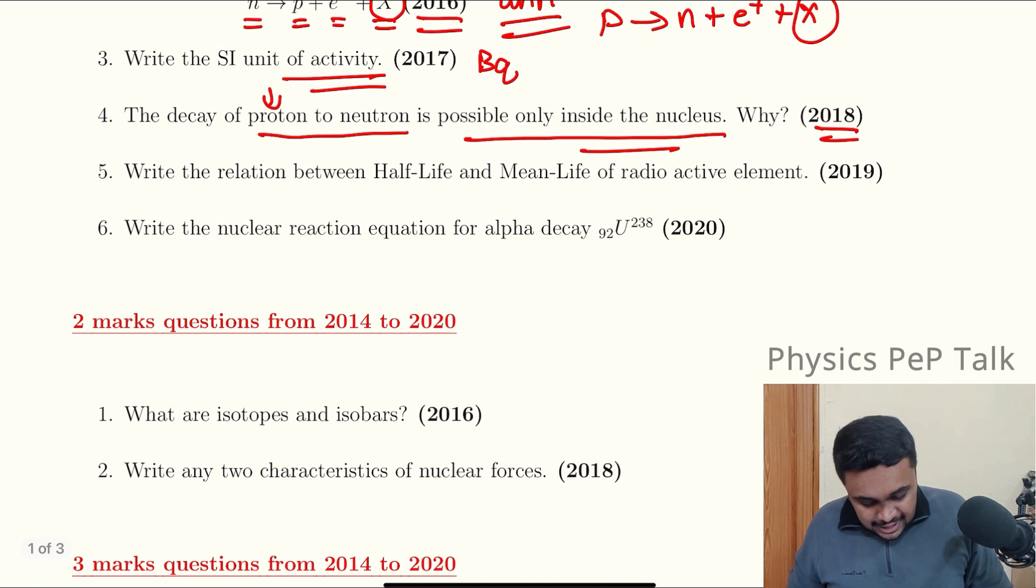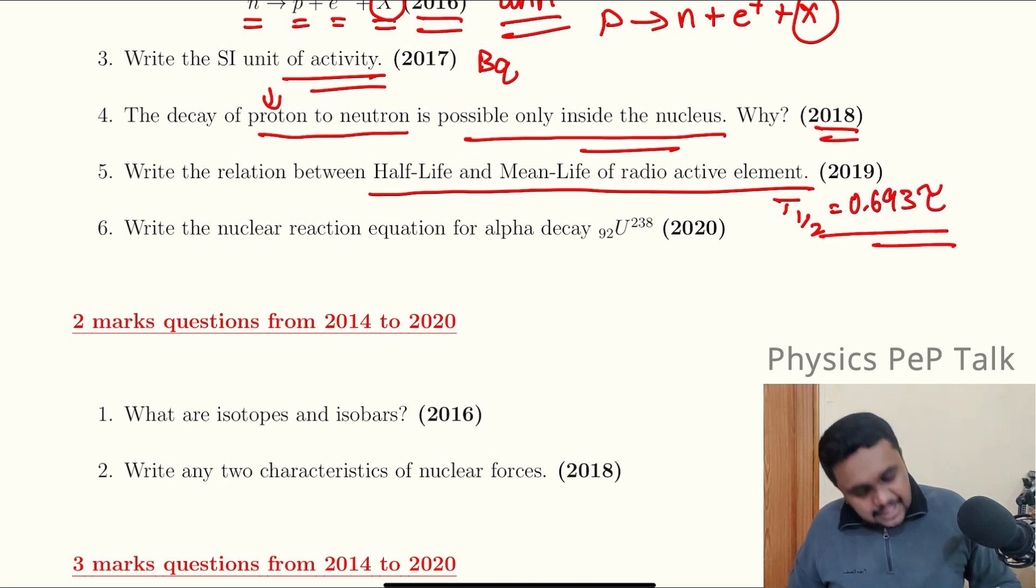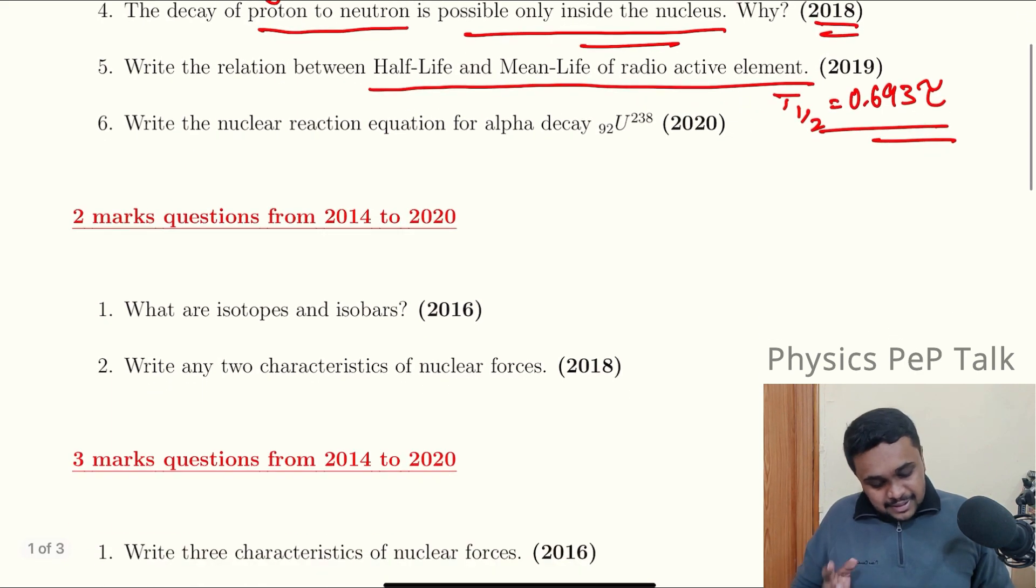Write the relation between half-life and mean life of radioactive element. T half is equal to 0.693 tau. T half is half-life and tau is the mean life. This is one mark.